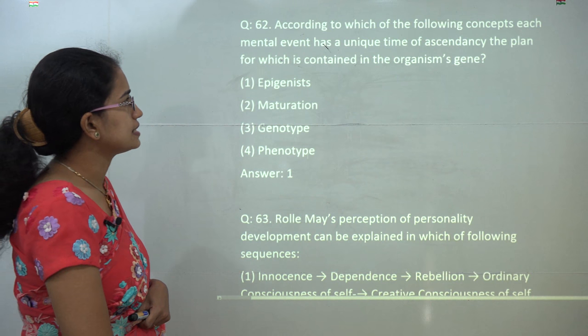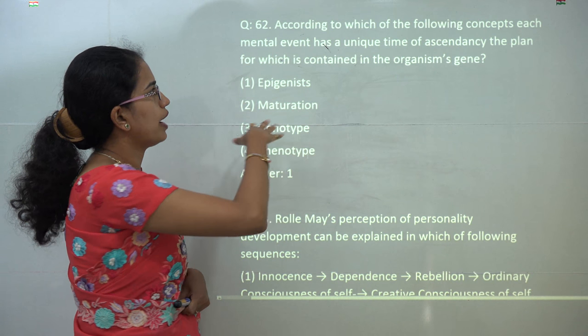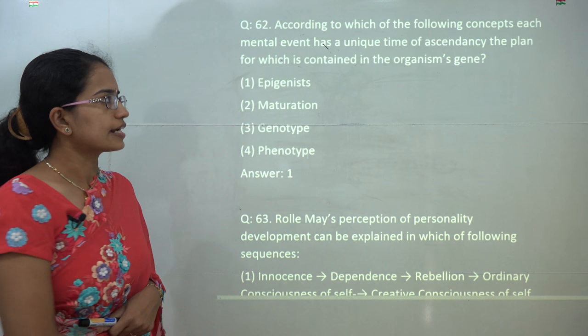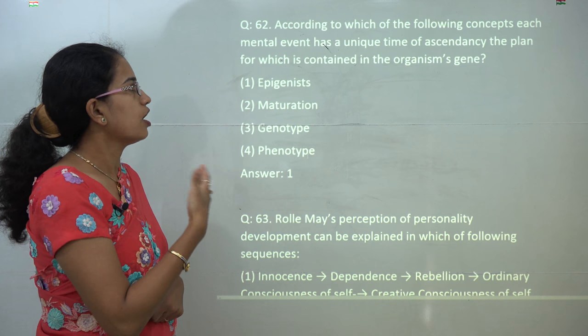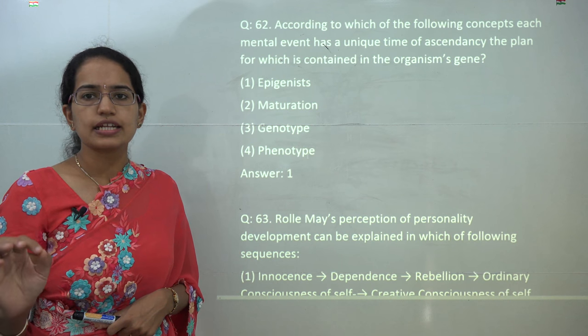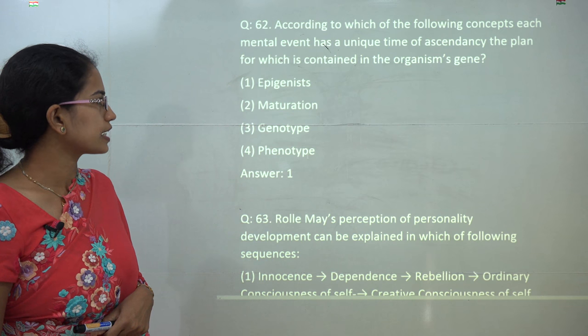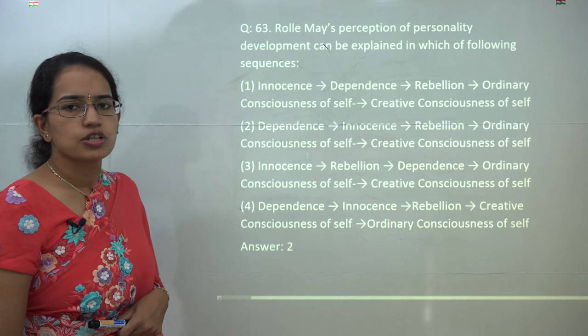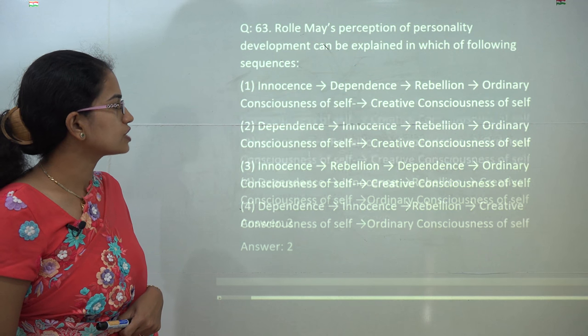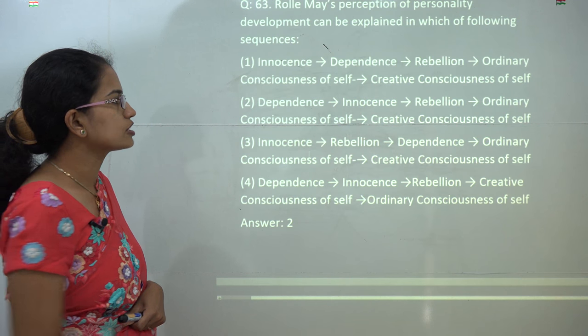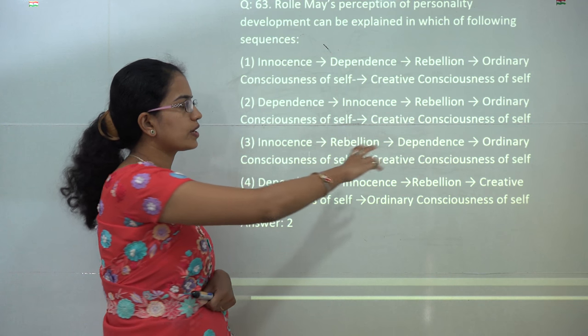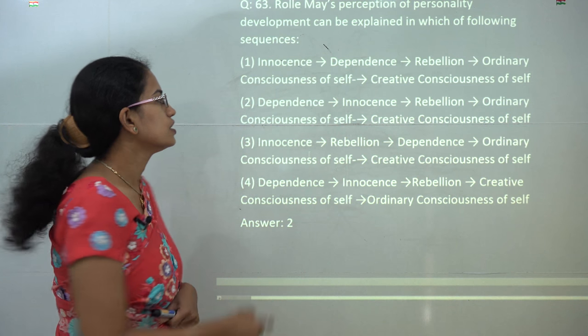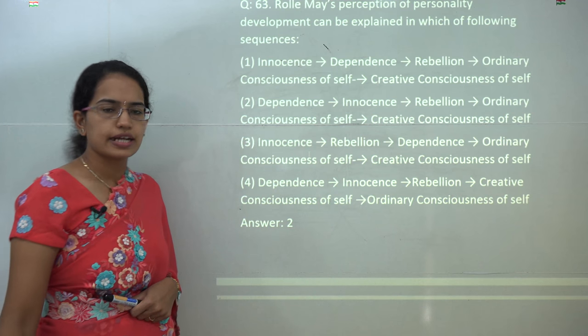Now, next, epigenists are those who explain the mental events that have unique time of ascendancy or of the plan that is contained in the organism's genes. So the correct answer is one. Now, Rollo May's conception of personality development starts with dependence, then he talks about innocence, rebellion, the ordinary self, and the creative self. So you have 2 as the correct answer here.